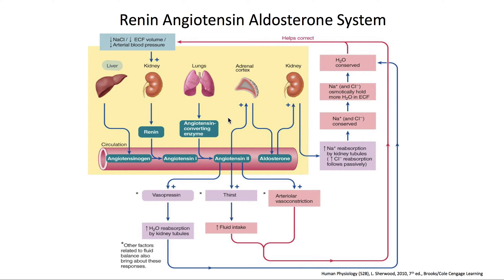Angiotensin 2 also activates the adrenal cortex, which then stimulates the release of aldosterone. The aldosterone goes back and works on the kidney — so you can see the kidney coming full circle. When aldosterone works on the kidney, you end up getting increased sodium reabsorption by the kidney tubules, which leads to increased chloride reabsorption. When you have the two of them being conserved, you osmotically retain more water in the ECF, which helps correct the low ECF volume. Together with the arterial vasoconstriction and the fluid intake, these three effects increase the volume, helping make up for the low ECF volume and the low arterial blood pressure.